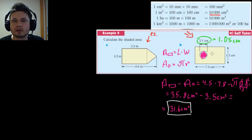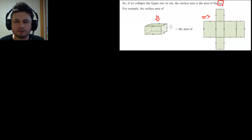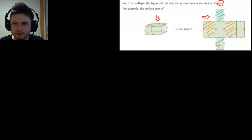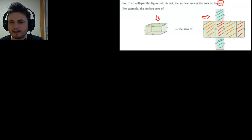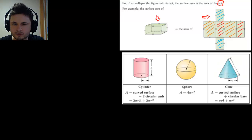Now let's look at surface area of 3D shapes. A 3D figure has something called a net — you deconstruct it into a collection of 2D figures. For a rectangular prism, there are six rectangles: you find the areas of three pairs of rectangles, multiply each by two, and add them together. This is what you need to remember when working with surface areas.